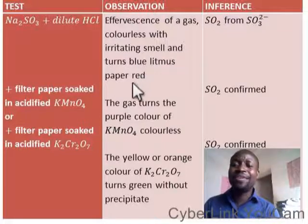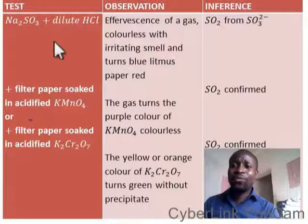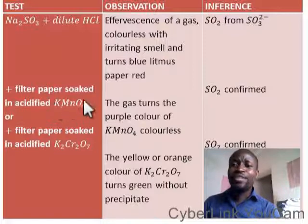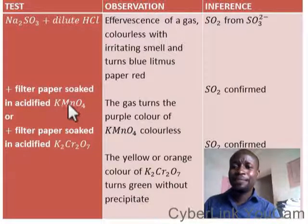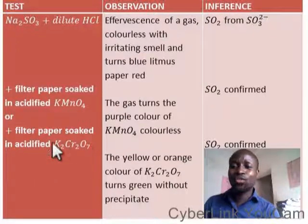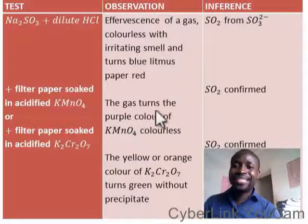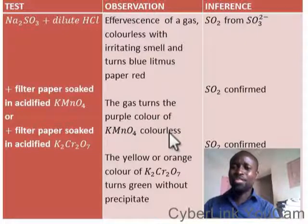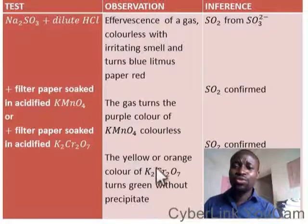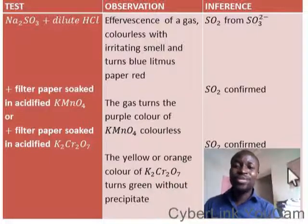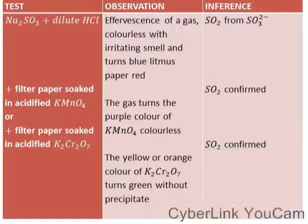The gas has an irritating smell. The gas turns blue litmus paper red. Now look at the further test. When you decide to use filter paper soaked in acidified KMnO4, or filter paper soaked in acidified K2Cr2O7, the gas will turn the purple color of KMnO4 colorless. Now K2Cr2O7 is orange or yellow in color — the color will be turned green. When you see this, SO2 gas is confirmed. Yes, obviously, SO2 gas is confirmed.